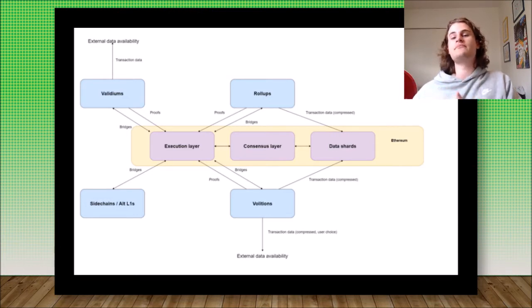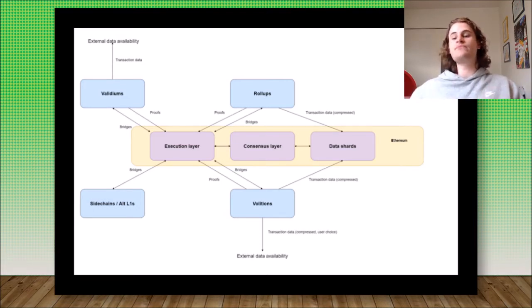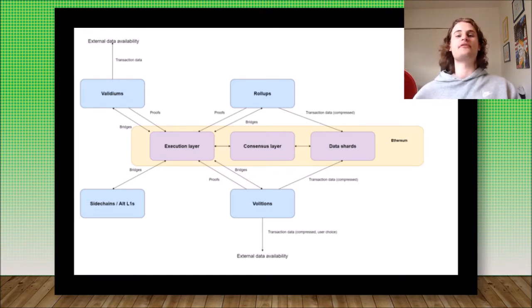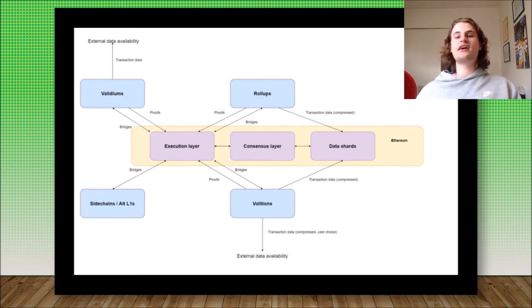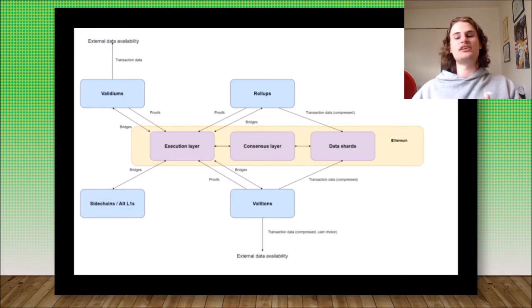More and more Ethereum is issued over time in order to reward the stakers. So we've got the execution layer and the consensus layer down. Data shards is something that is coming to Ethereum in Ethereum 2.0. Essentially, what data shards are going to do is give Ethereum more space and more data availability. This means that rollups and volitions are able to post transaction data to the data shards, and the data shards will hold all of this data. These are very important in understanding what rollups, Validiums, and Volitions all are.